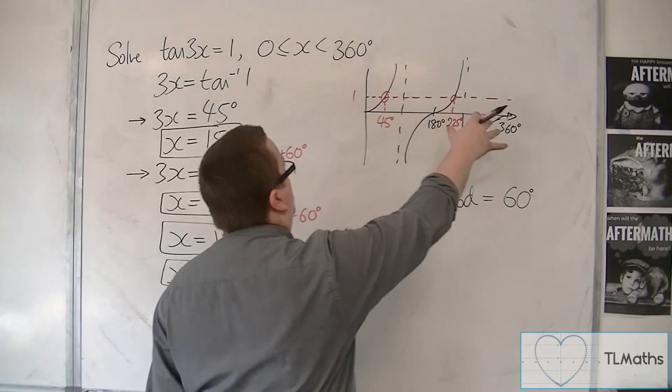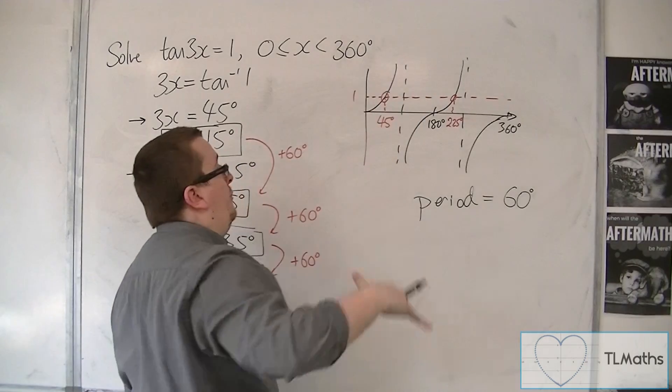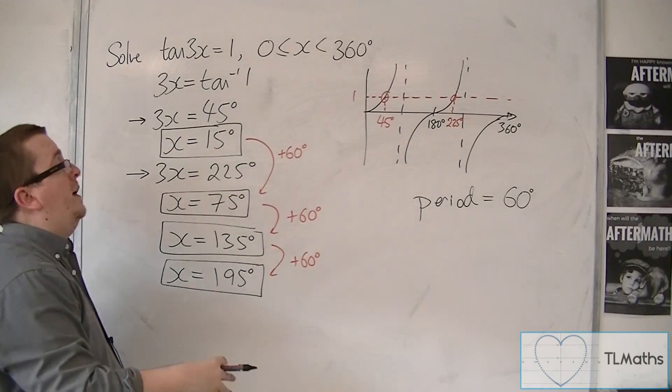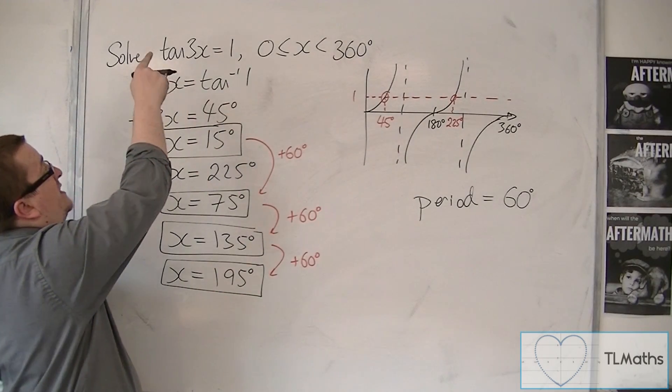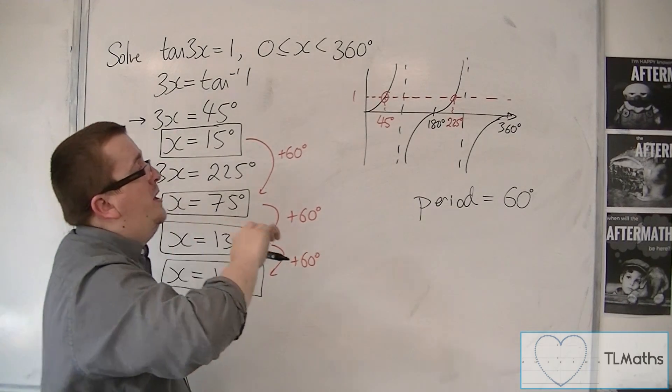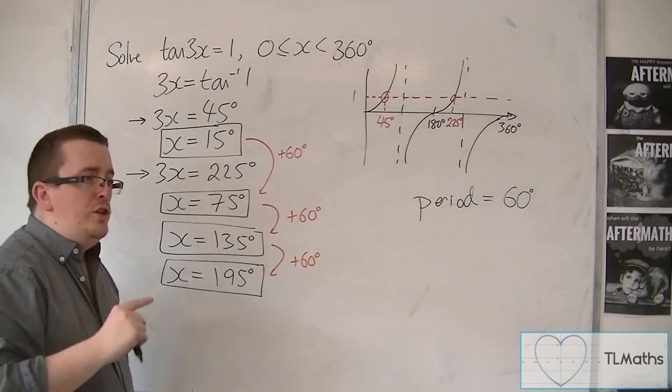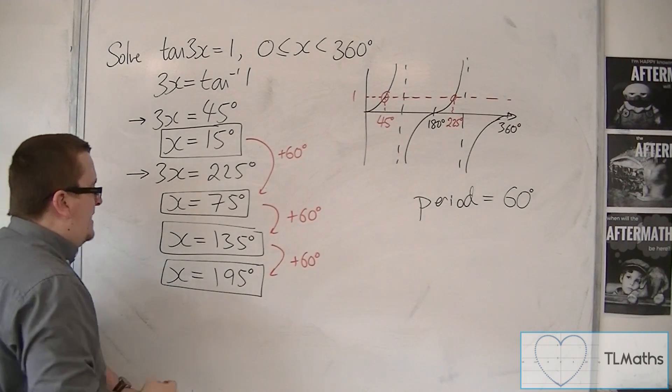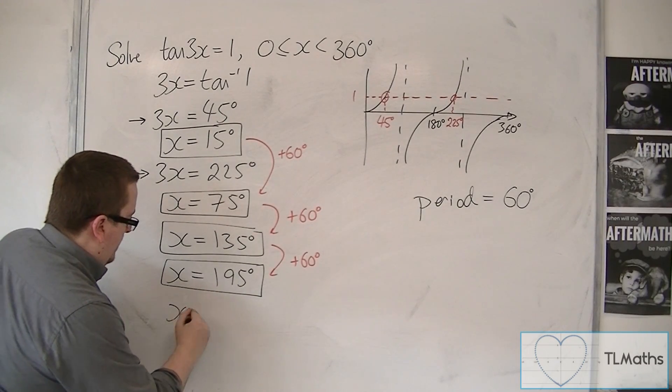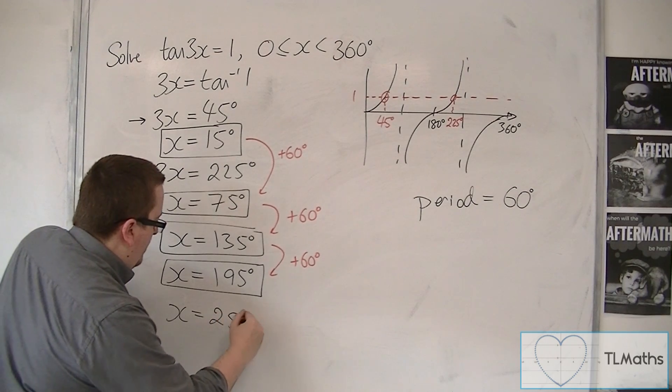Tan between 0 and 360, we would expect two solutions. So between 0 and 360 for tan(3x), we'd be able to fit three times as many solutions in. So there should be six. So we're going to add 60 degrees to this. That's going to get us 255 degrees.